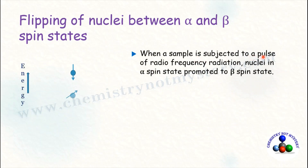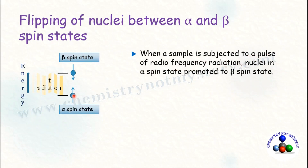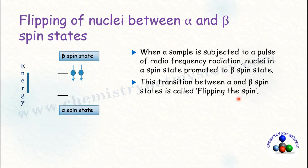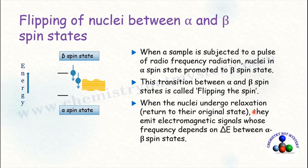When a sample is subjected to a pulse of radio frequency radiation, nuclei present in the alpha spin state are promoted to the beta spin state. This transition is called flipping the spin, or the flipping of nuclei between alpha and beta spin states. When the nuclei undergo relaxation and return to their original state, they emit electromagnetic signals.